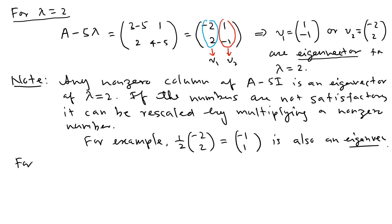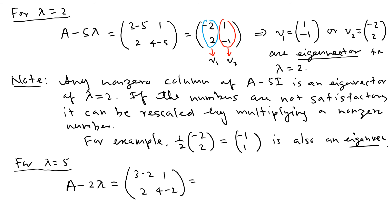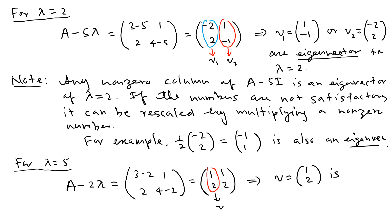For lambda equal to 5, we subtract the other eigenvalue and compute A minus 2I: [3 minus 2, 2; 1, 4 minus 2] which gives [1, 2; 1, 2]. You can see both columns are the same, so just pick the column. This implies v = [1, 2] is an eigenvector for lambda equal to 5.